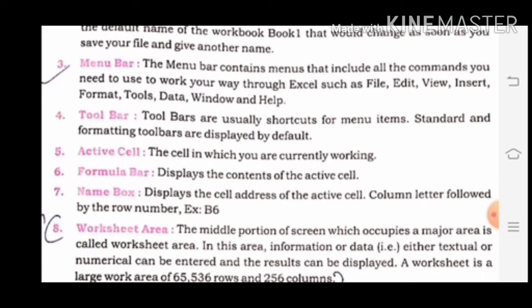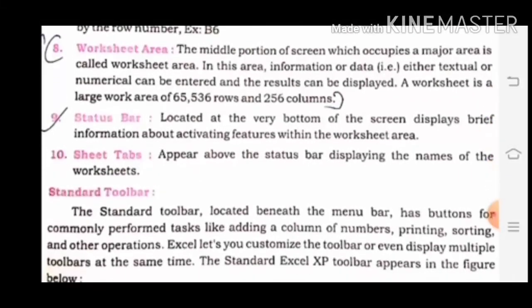The cell address is the column letter followed by the row number — for example, B6. Eighth is Worksheet area. The middle portion of the screen which occupies a major area is called the worksheet area. In this area, information or data, either textual or numerical, can be entered and results can be displayed. A worksheet is a large work area of 65,536 rows and 256 columns. Ninth is Status bar, located at the very bottom of the screen, displaying brief information about active features. Tenth, Sheet tabs appear above the status bar displaying the name of the worksheet.